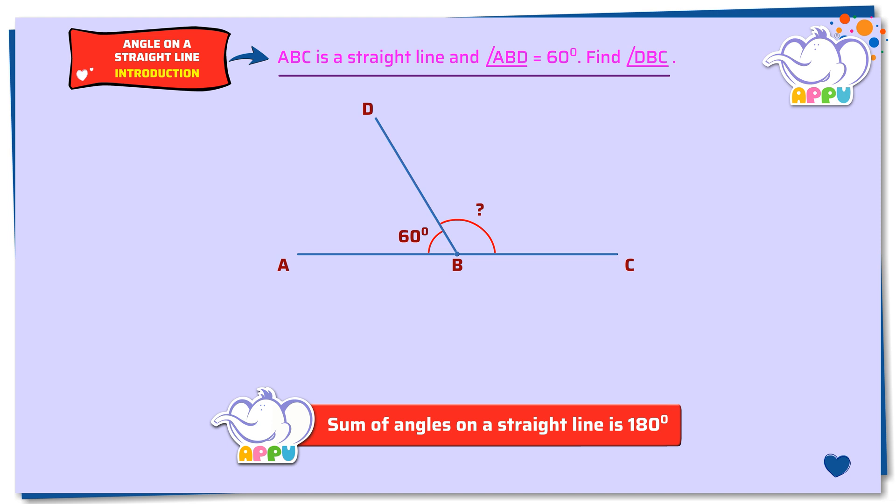Since the sum of angles on a straight line is equal to 180 degrees, we write angle ABD plus angle DBC equals 180 degrees. 60 degrees plus angle DBC equals 180 degrees.